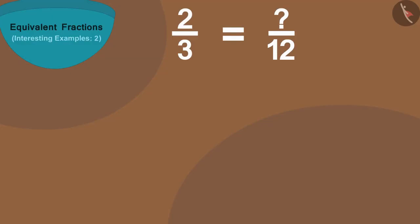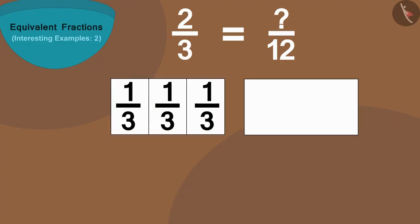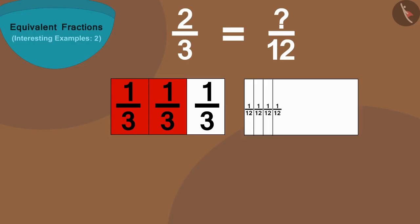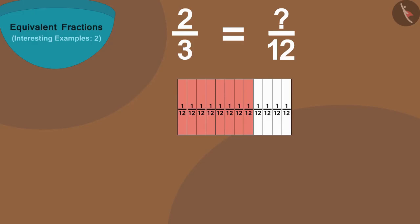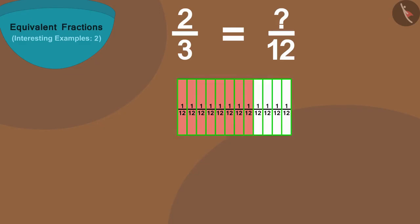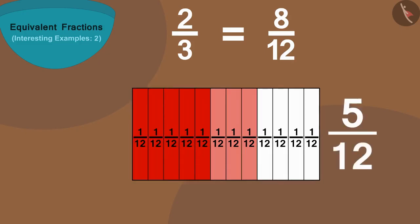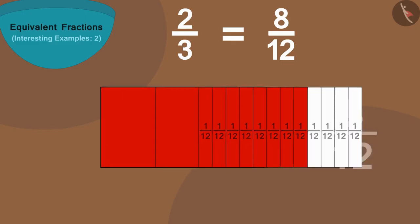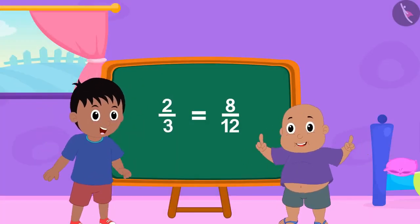Well done children, you have found it absolutely right! If we take two equal length strips and divide one of them into three equal parts and the other into twelve equal parts, and then put the second strip on top of the first strip, we will find that three parts of the first strip are equal to twelve parts of the second strip. And if we look closely, eight parts of the second strip is equal to two colored parts of the first strip. Thus, two by three is equal to eight by twelve.